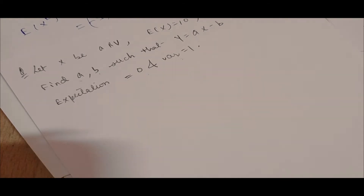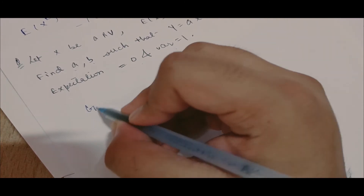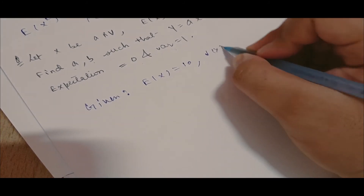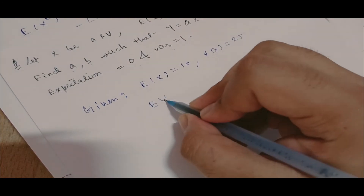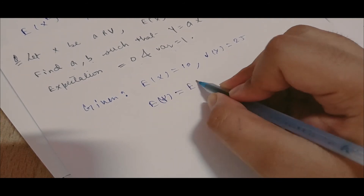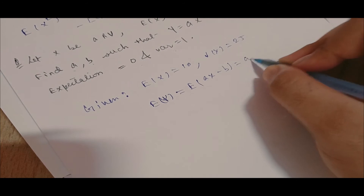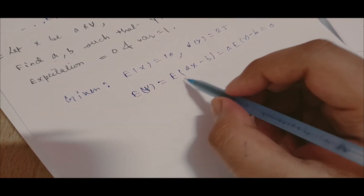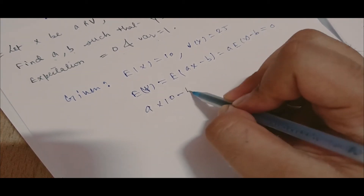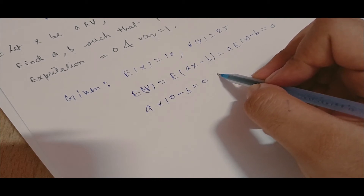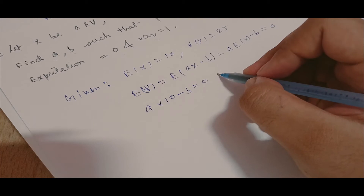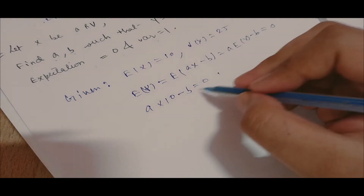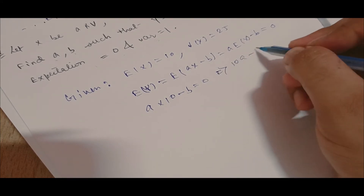Given: E(X) = 10 and V(X) = 25. For E(Y): E(aX - b) = a·E(X) - b = 10a - b = 0, since E(Y) is given as 0. So 10a - b = 0 is Equation 1.